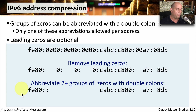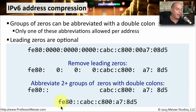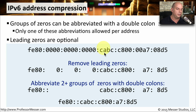So now we have a much smaller address. Now that we've removed the leading zeros and gotten rid of those multiple groups of zeros, we finally have an IPv6 address that is much more compressed than the original address.